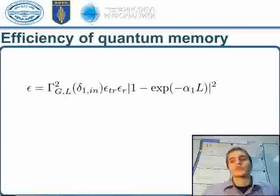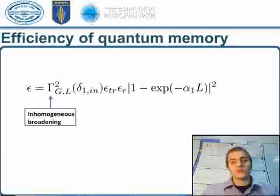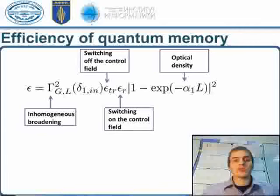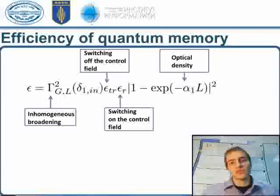Taking into account realistic parameters of the atomic system, there are several contributors to overall efficiency: the presence of inhomogeneous broadening on the optical transition, the rate of the switching-off and switching-on procedures, and the optical density of the atomic sample. As we found, the optimal strategy of switching procedures is to turn off the control field adiabatically and switch it on as fast as possible.